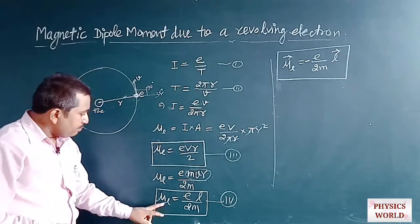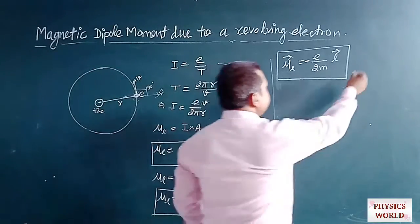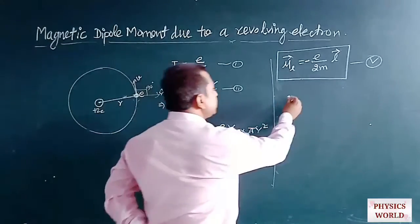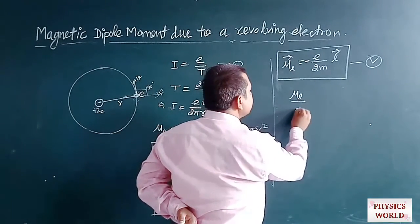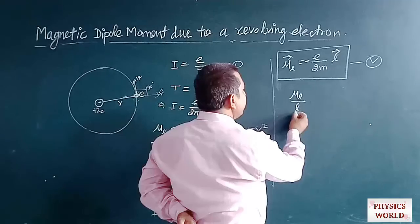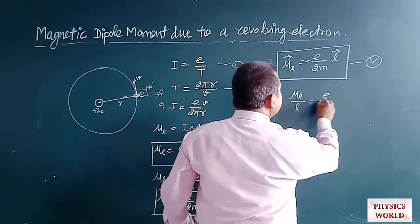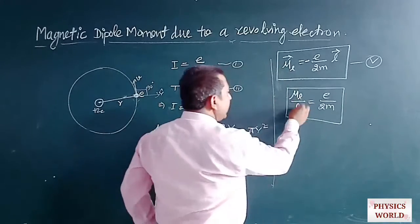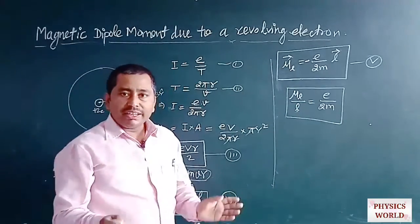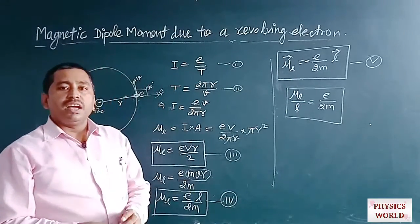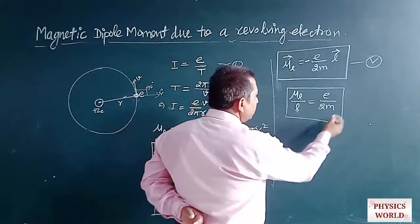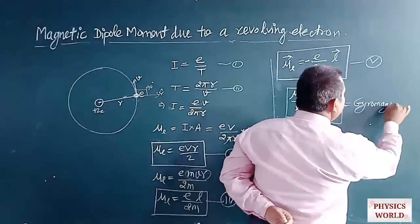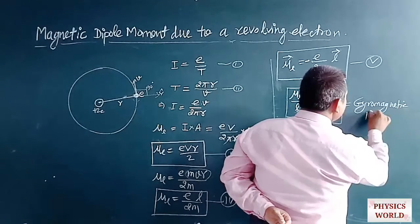The ratio μL / L represents the magnetic dipole moment per unit angular momentum. This term is a constant and is defined as the gyromagnetic ratio.